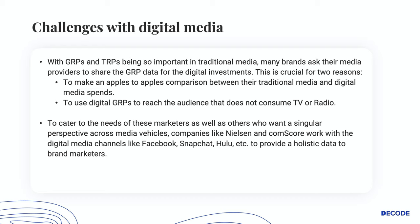GRPs and TRPs have existed for a long time and are extremely relevant for traditional media channels like radio and television. However, when it comes to digital, there are things to consider regarding their implications. Many brands ask their media providers to share GRP data for digital investments — so they can make an apples-to-apples comparison between traditional and digital media spends, and so they can reach audiences that do not consume TV or radio. Companies like Nielsen and Comscore work with digital media channels like Facebook, Snapchat, and Hulu to provide holistic data to brand marketers.